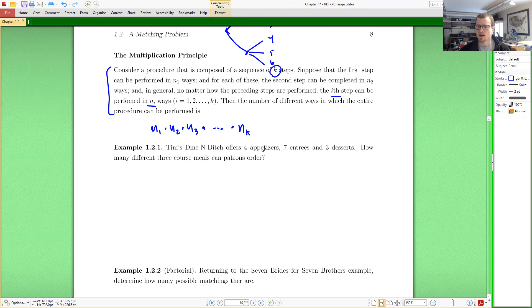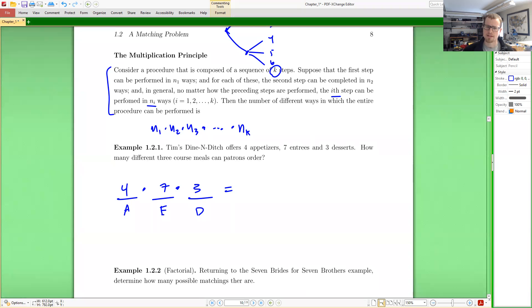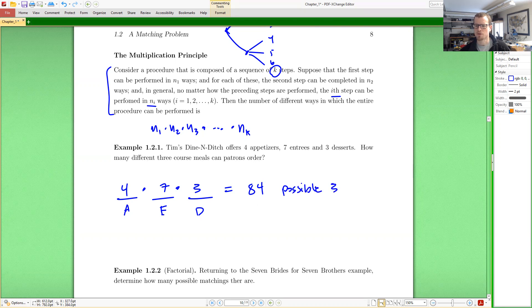So we want to see that played out a couple of different times. So Tim's Dine and Ditch offers four appetizers, seven entrees and three desserts. How many different three course meals can patrons order? Well, what I need to do is I need to in three steps, choose my three course meal. I need to choose the appetizer. I need to choose the entree and I need to choose the dessert. There are four appetizers, seven entrees and three desserts. So the number of ways that I can do this is simply the product of these three numbers. Four, seven times three first. Seven times three is twenty one. Twenty one times four is eighty four. So that gives us eighty four possible three course meals.